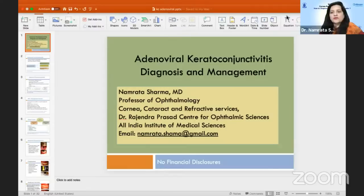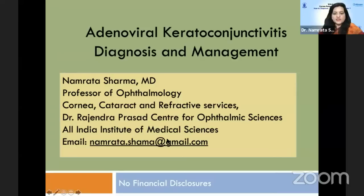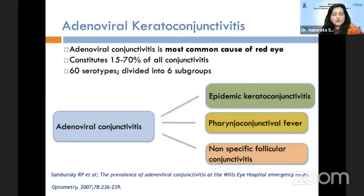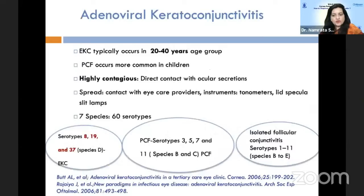Adenoviral keratoconjunctivitis is the most common cause of red eye in the world and constitutes about 15 to 70% of all conjunctivitis. There are 60 serotypes divided into six groups. It can occur as epidemic keratoconjunctivitis, pharyngoconjunctival fever, or as non-specific follicular conjunctivitis. The age group is generally 20 to 40 years; pharyngoconjunctival fever occurs most commonly in children and is highly contagious because of direct contact with ocular secretions. Spread can also occur from contact with eye care providers, instruments, tonometers, lid specula, and slit lamps.